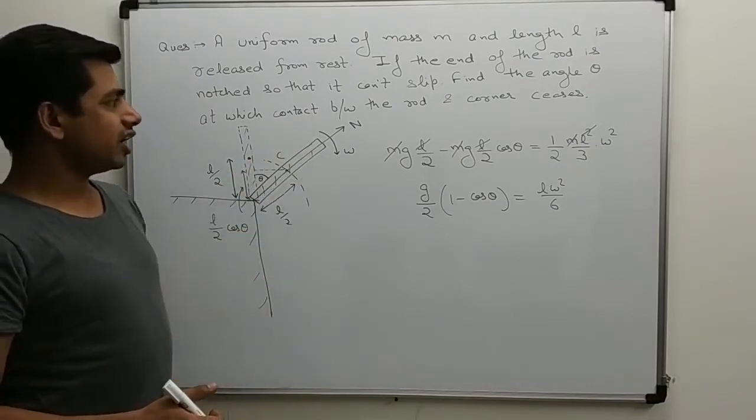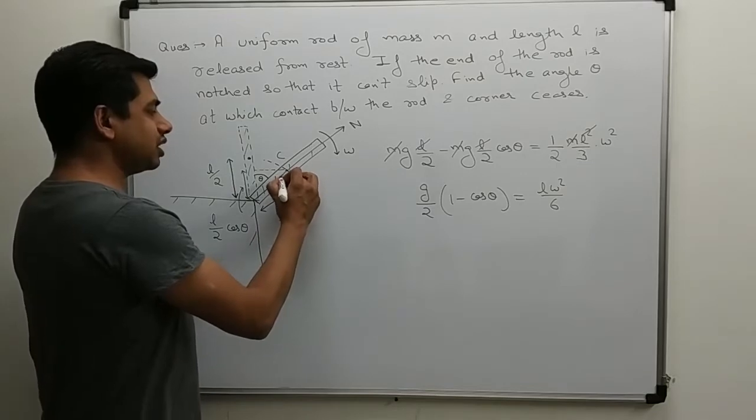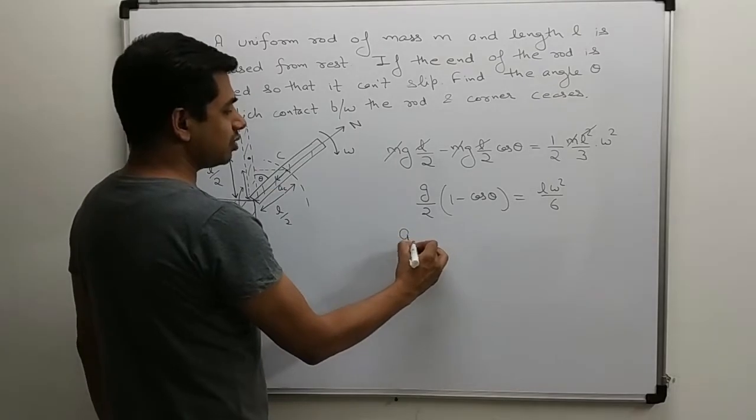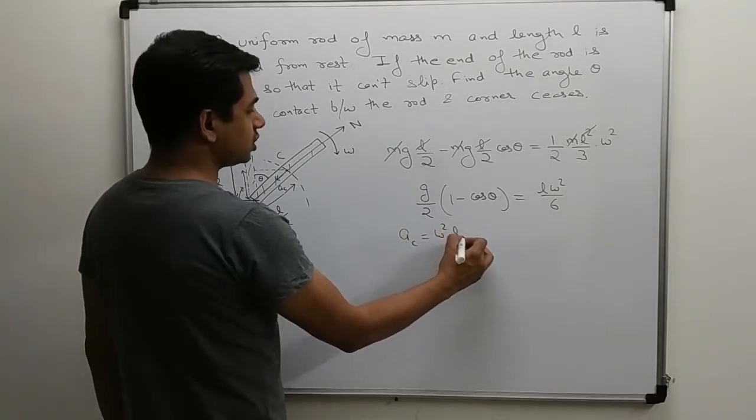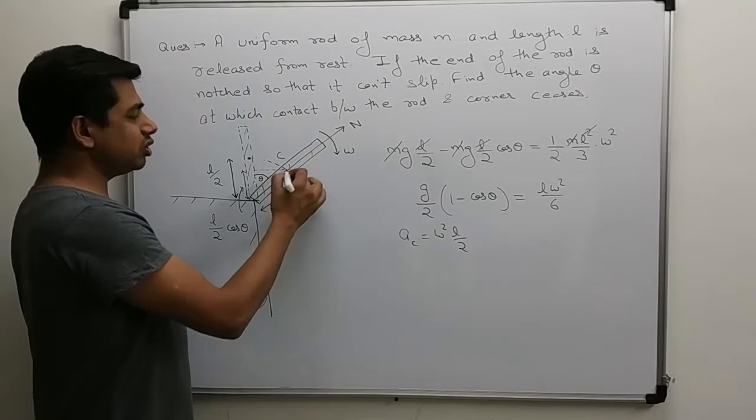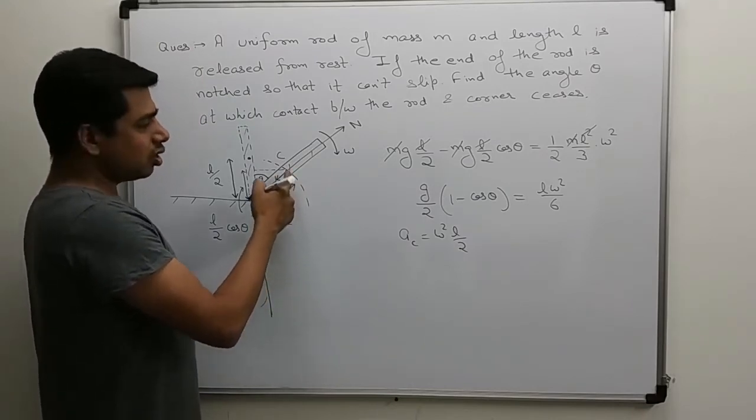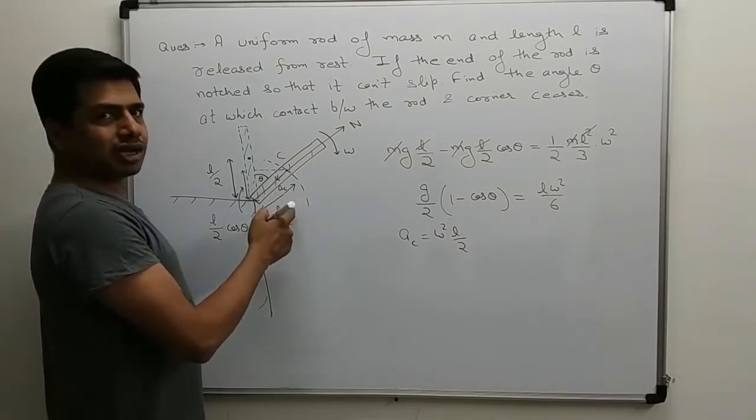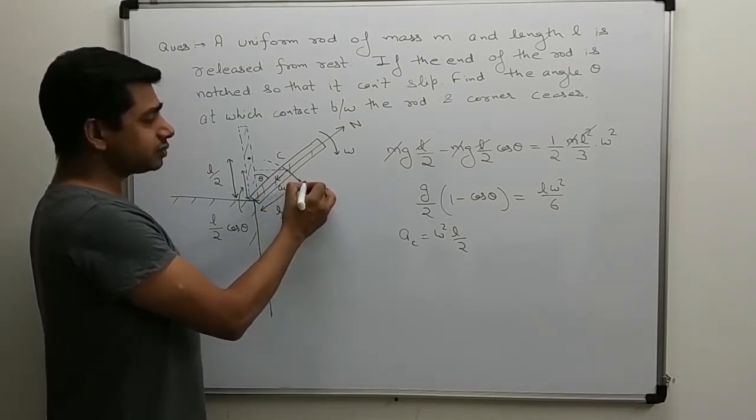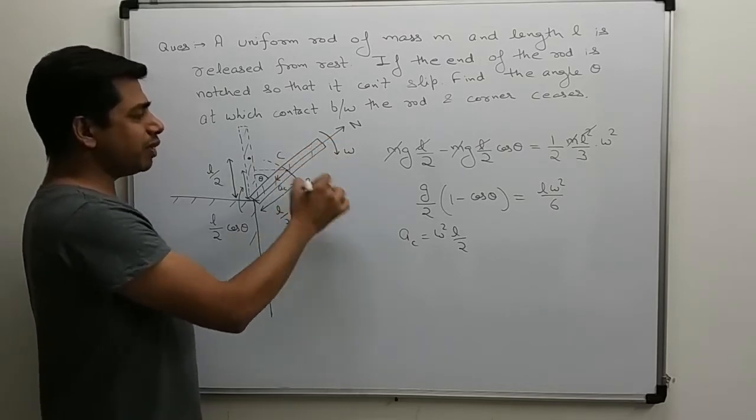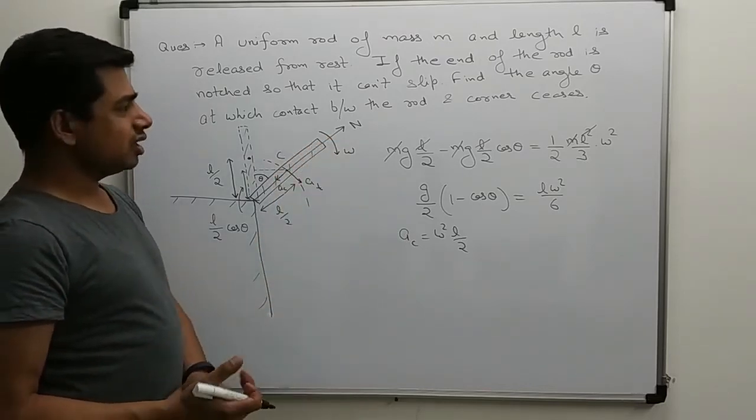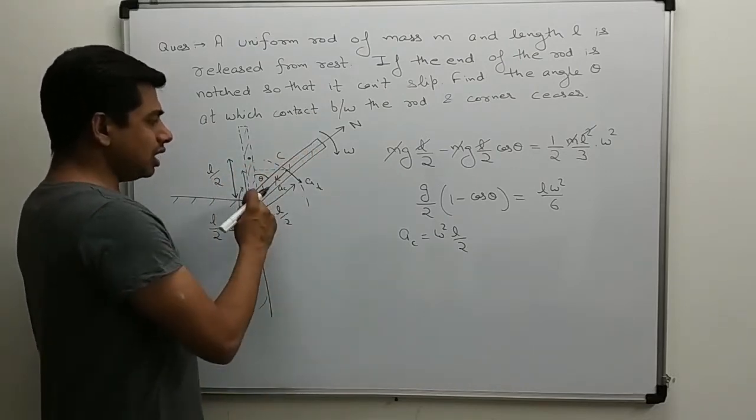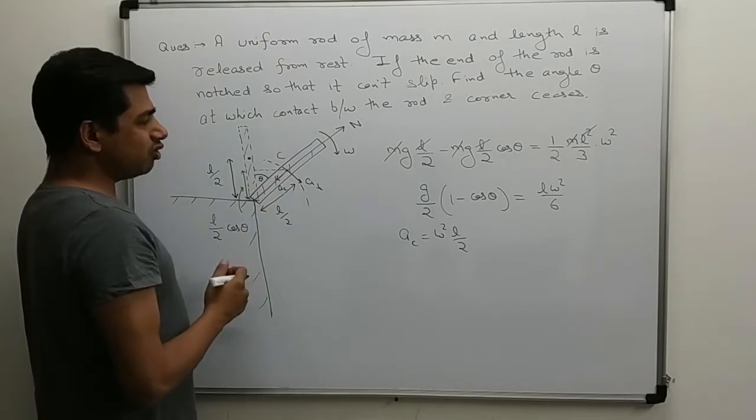Normal is basically acting in radial direction. If we talk about center of mass, it is moving in circular path. For circular path we use force equations in radial and tangential directions. Normal is acting in radial direction and its centripetal acceleration will be in radial direction. Centripetal acceleration will be omega square l by 2 because center of mass is rotating in circle of radius l by 2.